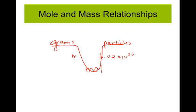On the other side, to go between grams and moles, I'm going to use the molar mass or formula mass. If I want to go from grams down to moles, I divide by my molar mass. If I have moles and want to go up to grams, I multiply by the molar mass. Right now we're focusing on going between grams and moles using that molar mass — the atomic masses added up.